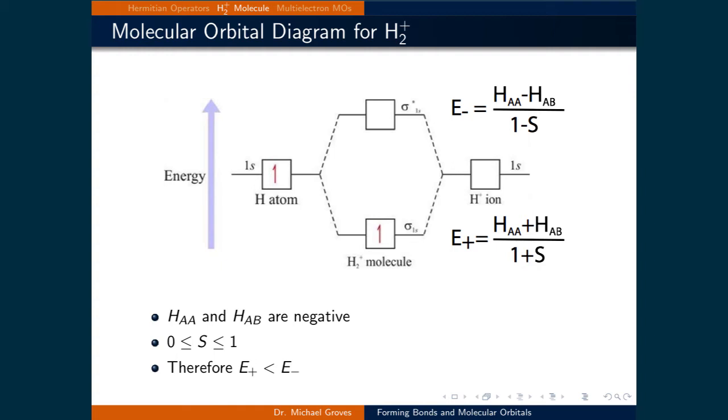Since HAA and HAB are negative, and S ranges between 0 and 1, E plus will always be less than E minus. This follows our expectation since E plus corresponds to a bonding orbital. The energy of the system should decrease when atomic orbitals overlap constructively.